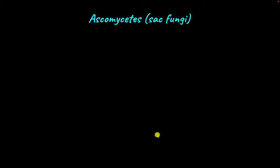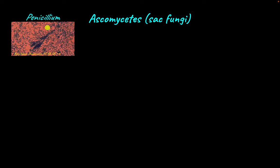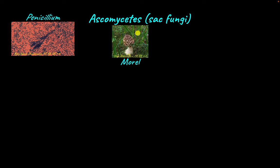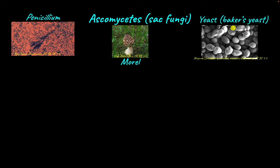The next phylum is Ascomycetes, or sac fungi — I will explain in just a minute why they are called sac fungi. Ascomycetes include many economically important fungi: Penicillium, from which we get the antibiotic penicillin; Morel, which is considered a delicacy in many parts of the world; and yeast (baker's yeast), extensively used in baking and brewing industries.